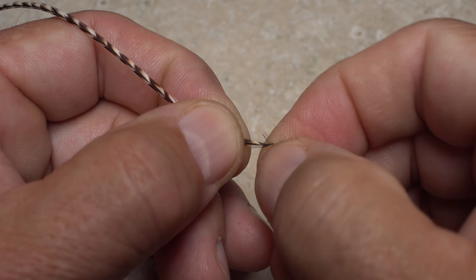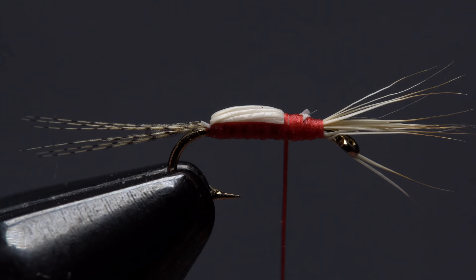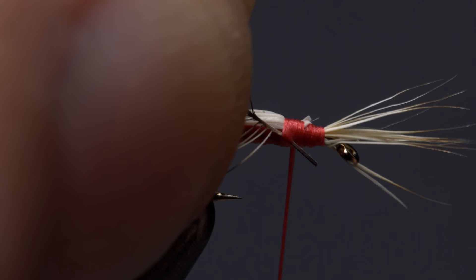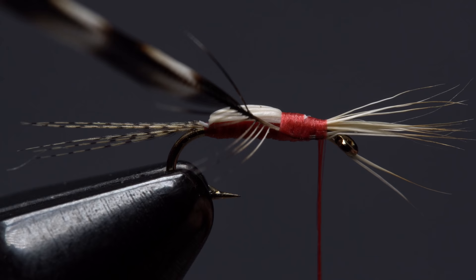Grizzly midge size saddle hackle is used to hackle the fly. Strip an eighth inch or so of the lower fibers free from the stem. With the shiny side of the feather facing you lay the bare stem against the near side of the hook and take thread wraps forward to secure it. End with your tying thread a little ways behind the hook eye.